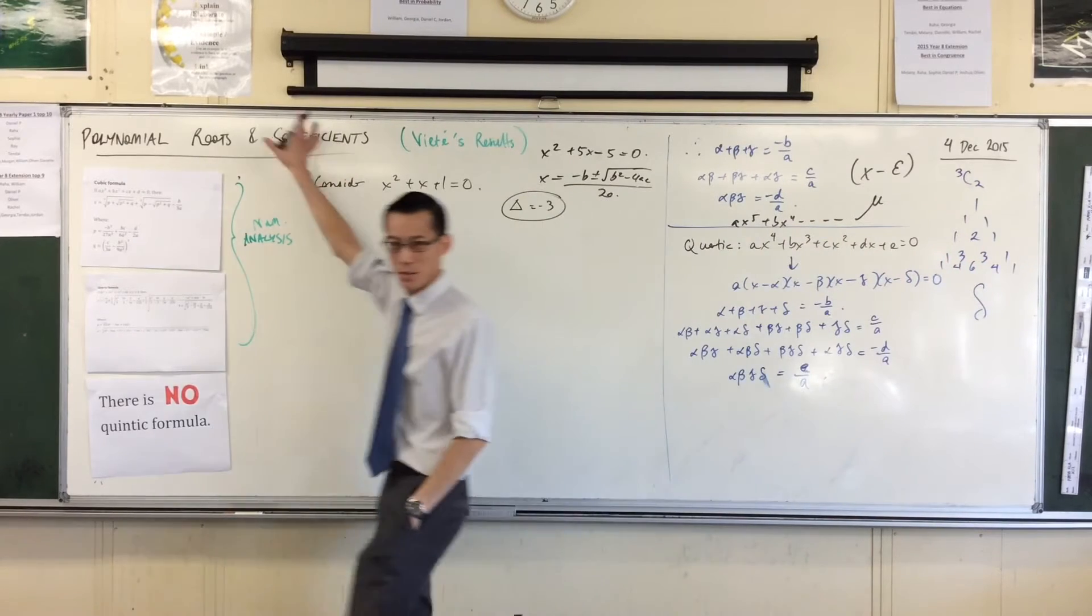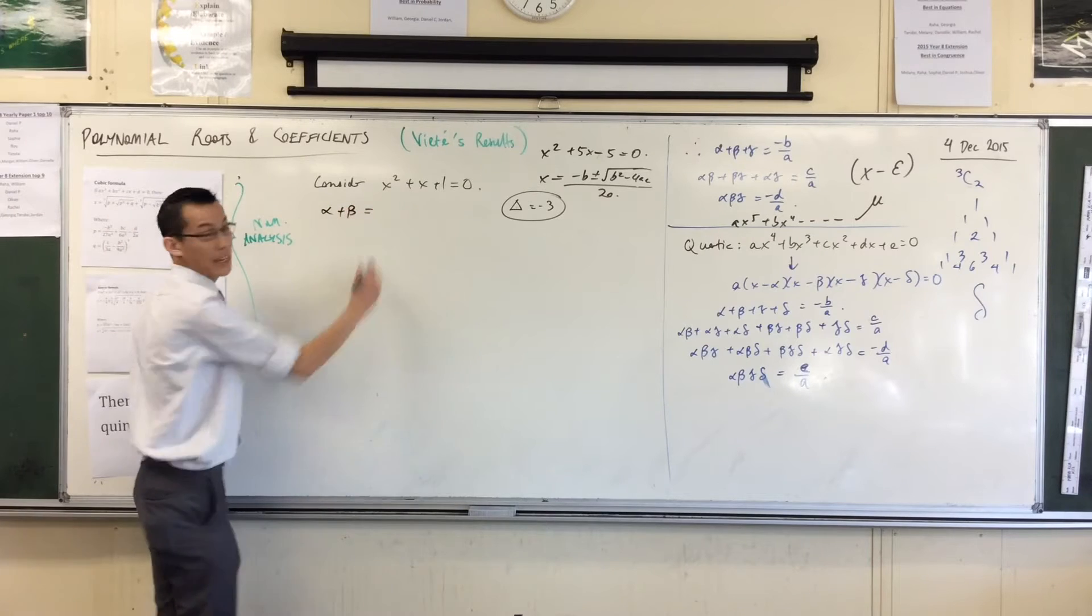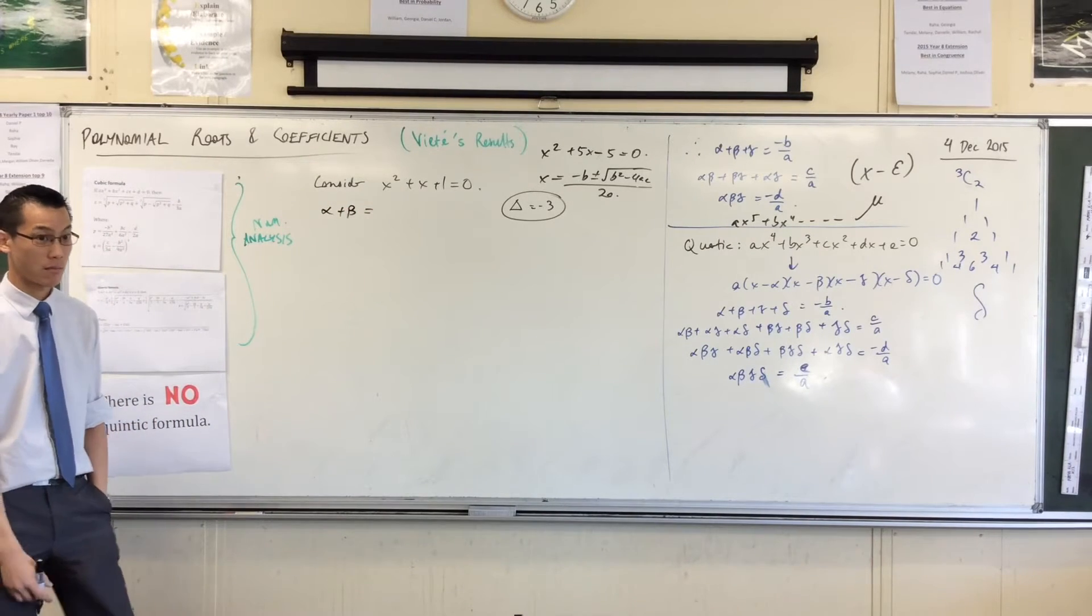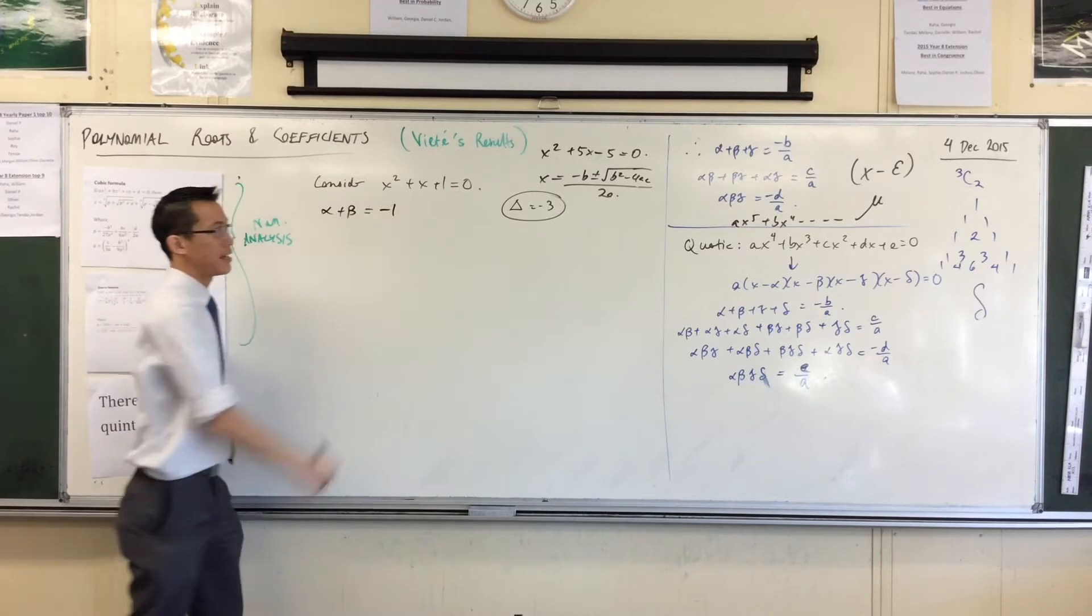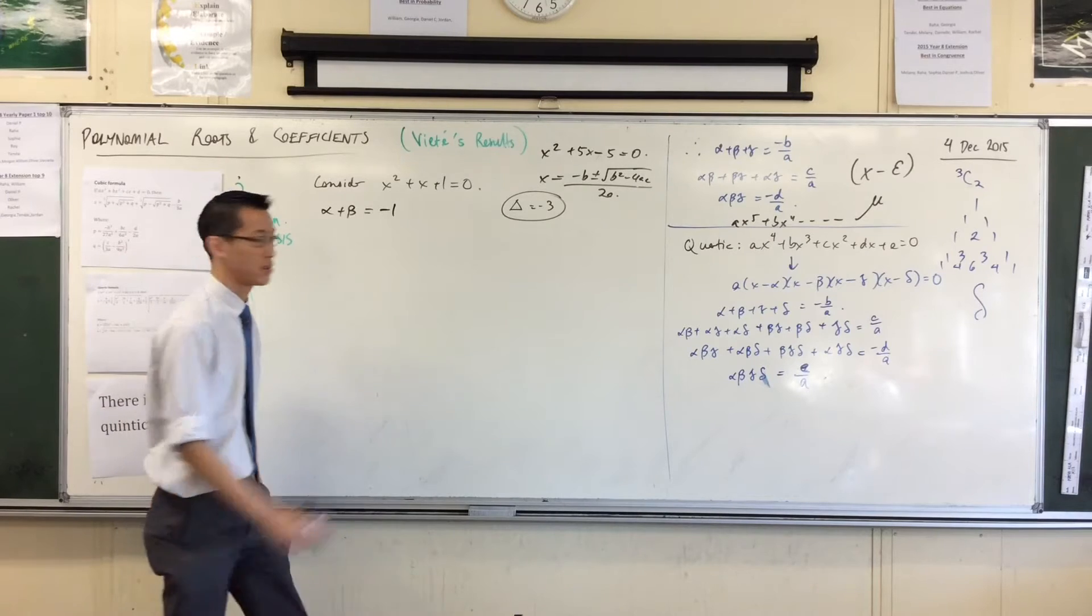Except for the fact that, well, Viete's results tell you that even though there aren't roots, you can add them. In this particular situation, what's minus b on a? It's minus 1. And apparently, we can also multiply them. What's c on a? It's just 1.